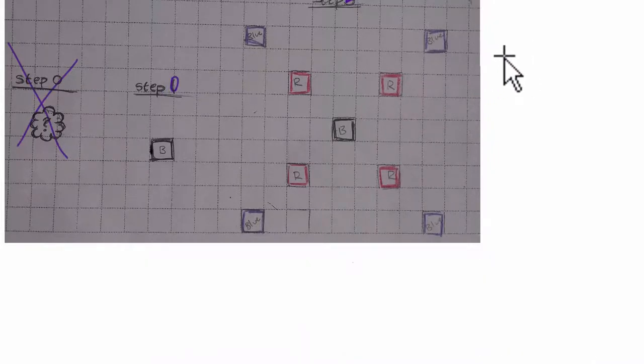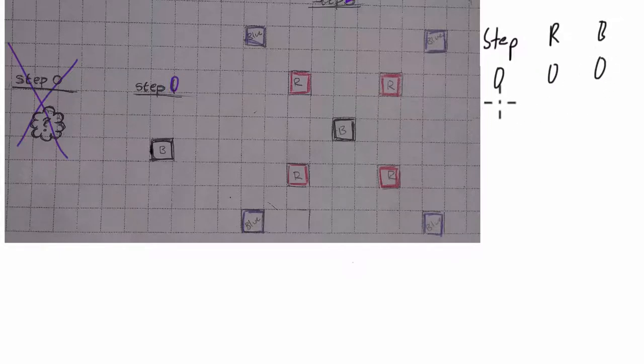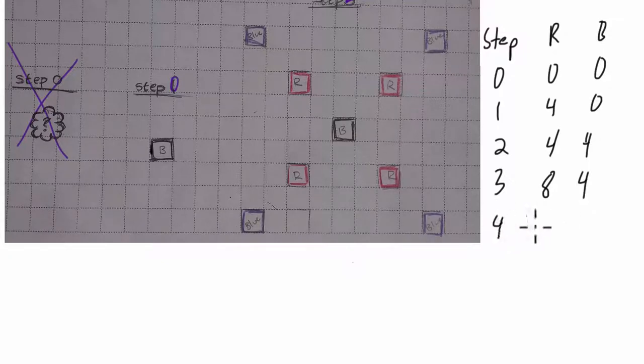All right, so now let's analyze the red and the blue pixels. So here, let's write down a little table. Just as you did, we have step, red, blue. So in step zero, there are no red and no blue, only black. In step one, we had four red, but still no blue. In step two, you can see here, there are four blue, finally, and still four red. In step three, we just now alternate back and forth. There will now be eight red and still four blue. In step four, there will be still eight red, but then finally eight blue.